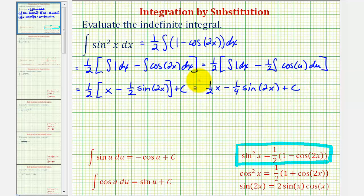So this would be our anti-derivative but we could also express this another way using a double angle identity. Since sine two x is equal to two times sine x cosine x we could perform another substitution here to write this in a slightly different way.